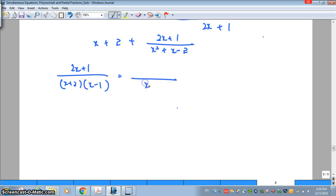You notice there are 2 linear denominators. Multiply by the original denominator.